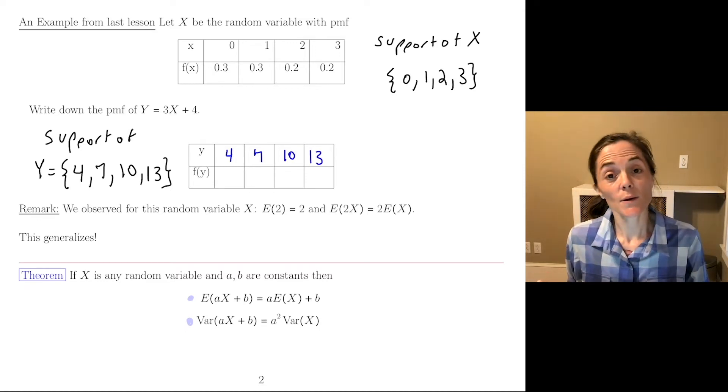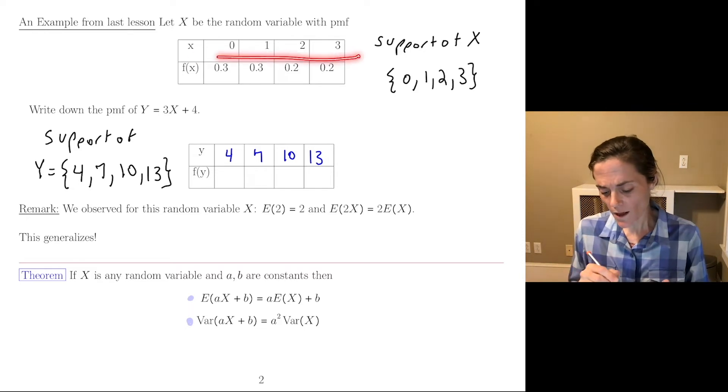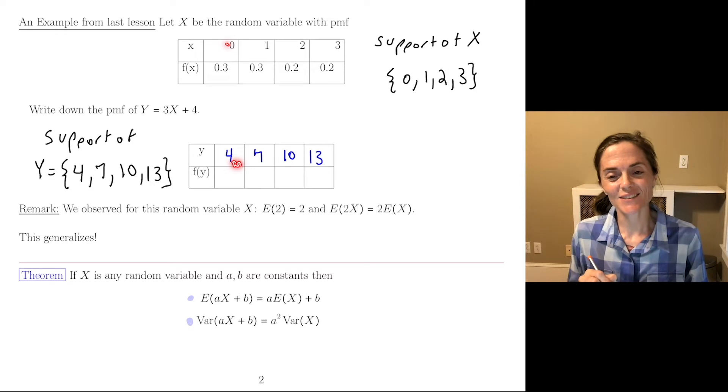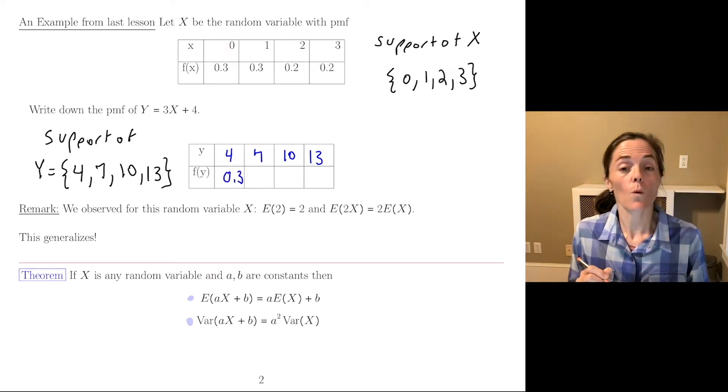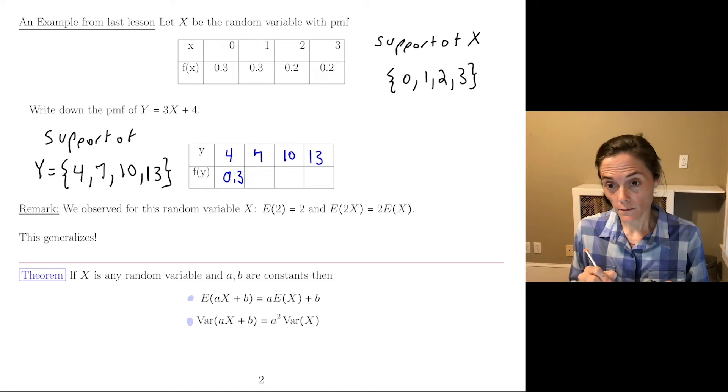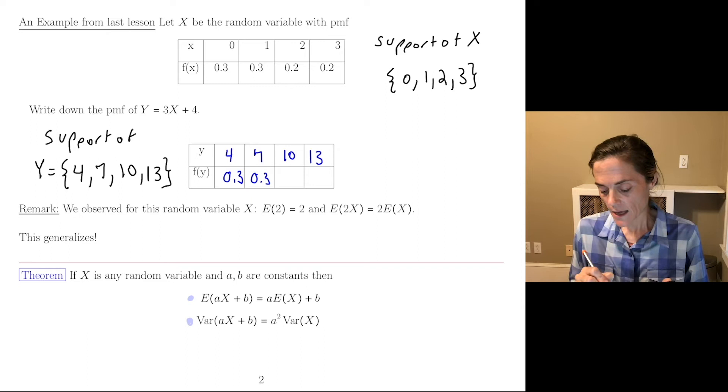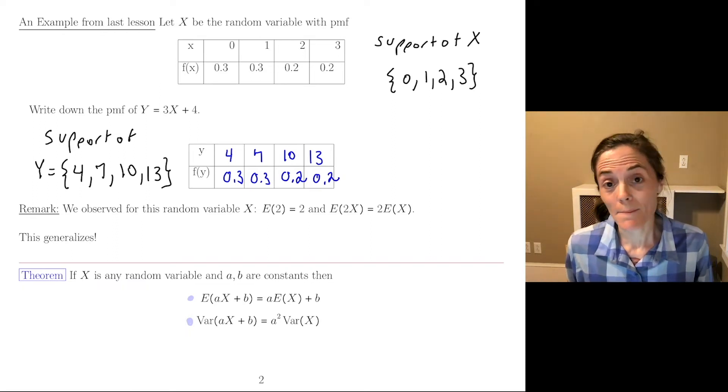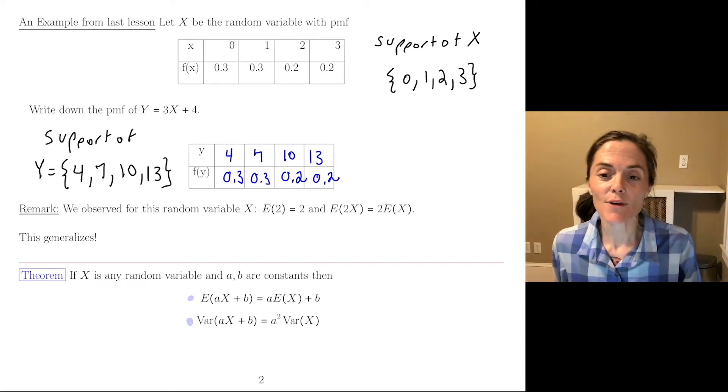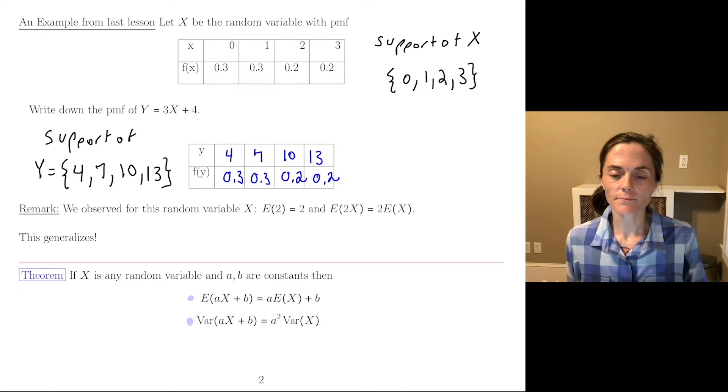How do you get the probabilities? You just look back. Which X maps to 4? And you write down this probability for F of Y. And then X equals 1 gave us the 7. X equals 2 gave us the 10. And X equals 3 gave us the 13. So this would be our probability mass function for 3X plus 4.